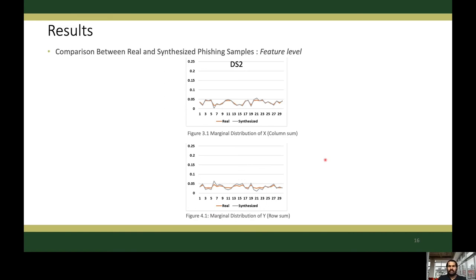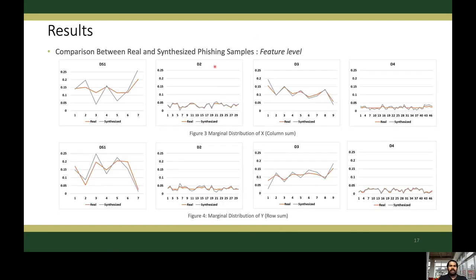We need to demonstrate that the generated synthesized samples are similar to real phishing samples. At the feature level, we ensure that the values assigned to features in the synthesized samples are similar to the real samples. We evaluated this through marginal distributions of both real and synthesized samples. These are the plots for dataset number two with marginal distributions for both column and row sums. The x-axis represents the feature number and the y-axis represents the marginal probability value. The similarity of the actual and generated lines confirms the similarity between actual and generated phishing samples at the feature level. These marginal distribution plots for all four datasets further confirm the capability of our data generation technique, with nearly identical marginal distributions across all datasets.